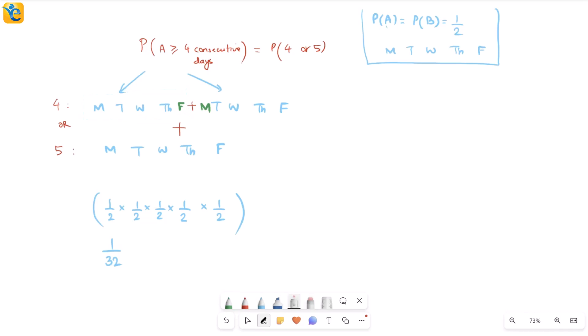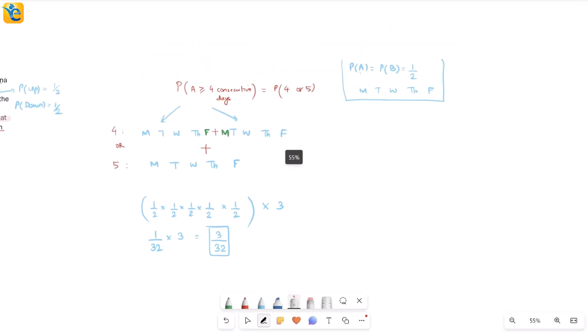Similarly, if I look at this one, why would there be any difference? It's still five days and everything is equally likely, so I'm going to have another one by 32 from here and another one by 32 from this one as well. Essentially I'm adding one by 32 with itself three times, or I can simply multiply it this way. So this is three by 32, which is the probability of him bringing an apple on at least four consecutive days.